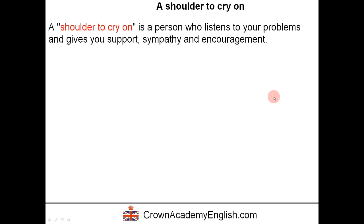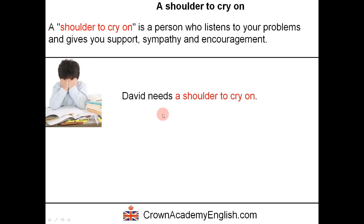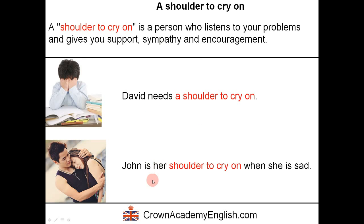A shoulder to cry on is a person who listens to your problems and gives you support, sympathy and encouragement — someone who is there for you when you feel sad and down. For example: 'David needs a shoulder to cry on' means David needs somebody to listen to his problems. And 'John is her shoulder to cry on when she is sad' means John gives her support and sympathy.